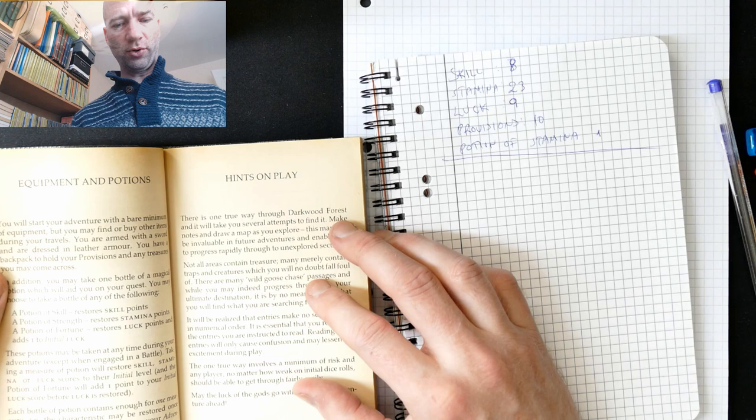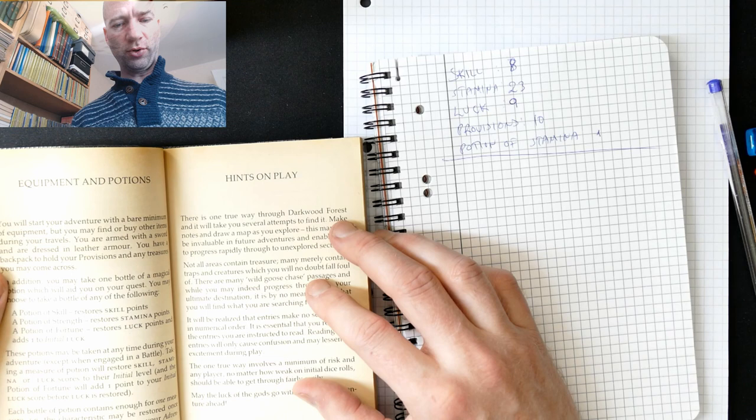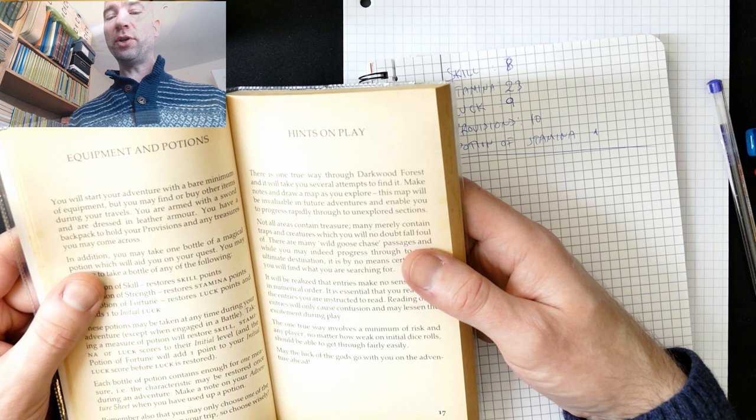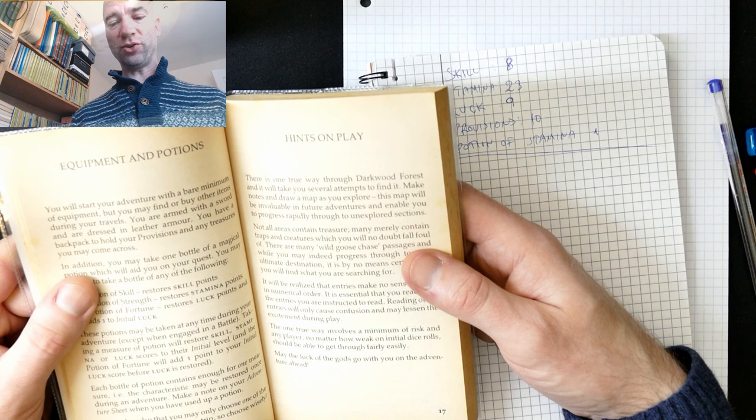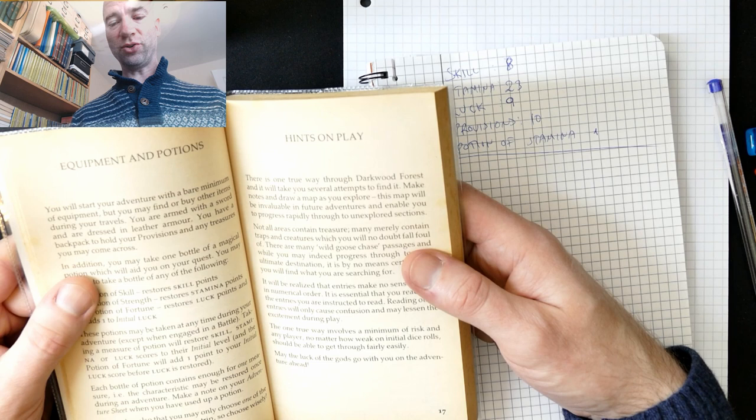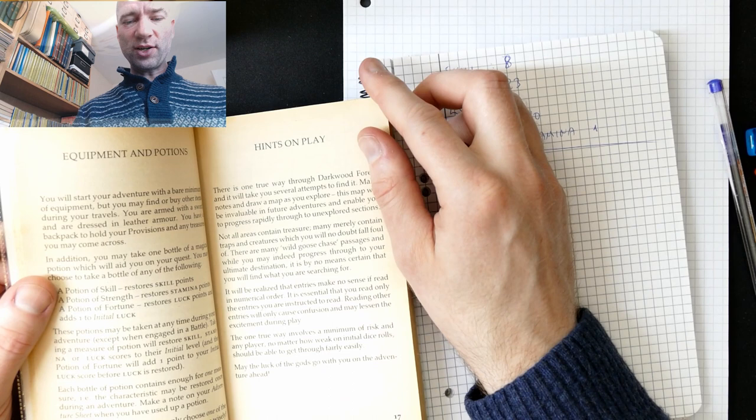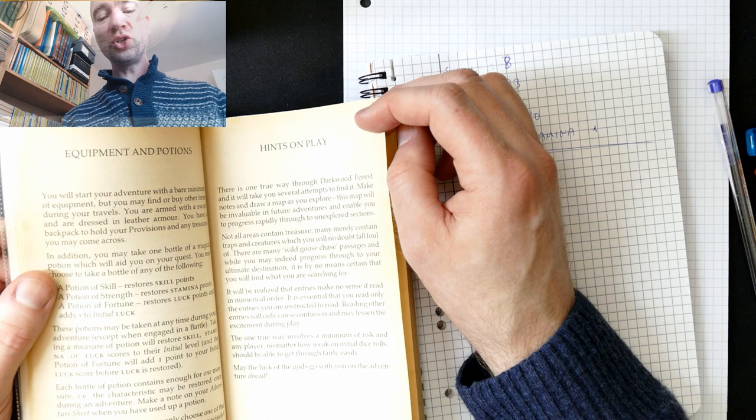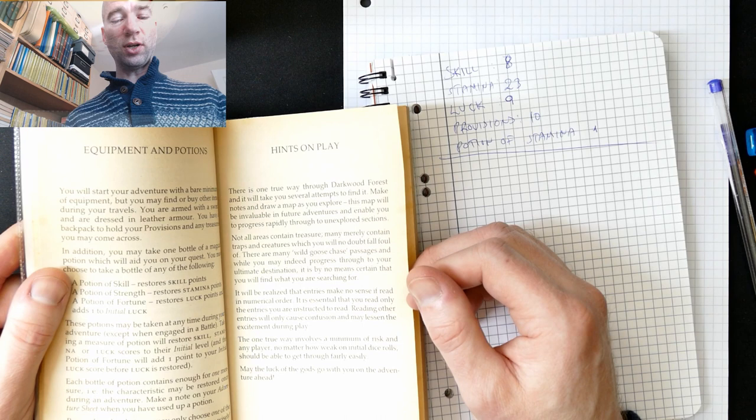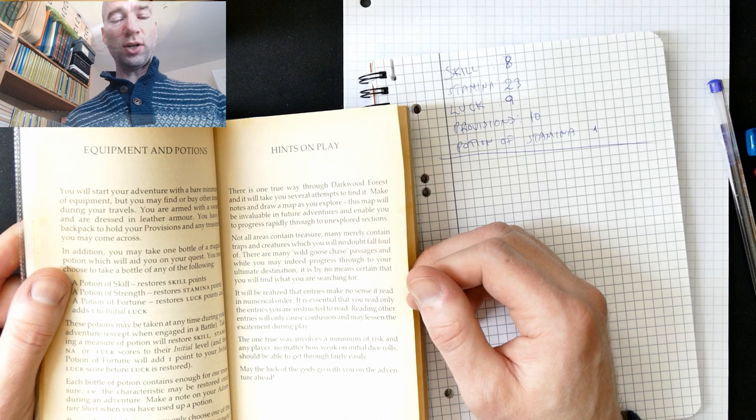Right. Remember to do the hints on play. Because it's slightly different from each book. And there is one true way through dark wood forest. And it will take you several attempts to find it. It's a little bit different. It says here. Make notes. And draw a map as you explore. This map will be invaluable in future adventures and enable you to progress rapidly through to unexplored sections. Not all areas contain treasure. Many merely contain traps and creatures. Why are you looking for treasure? This is the Ian Livingstone thing. You're so obsessed with treasure. Not all areas contain treasure. Many merely contain traps and creatures which you will no doubt fall foul of. There are many wild goose chase passages.